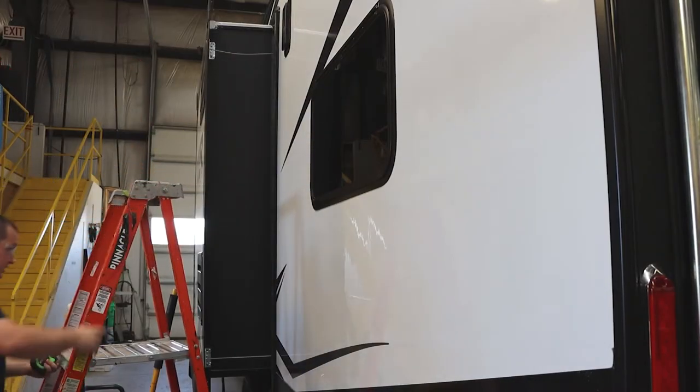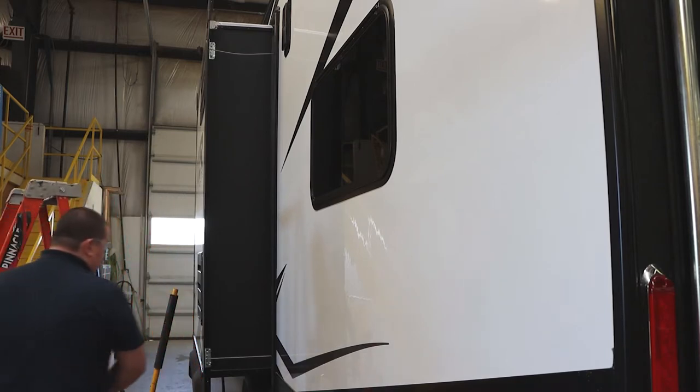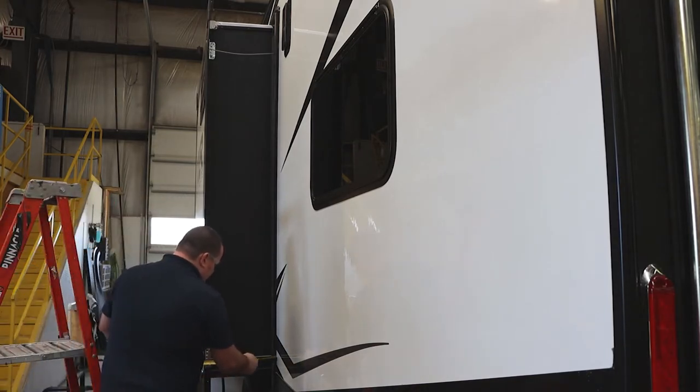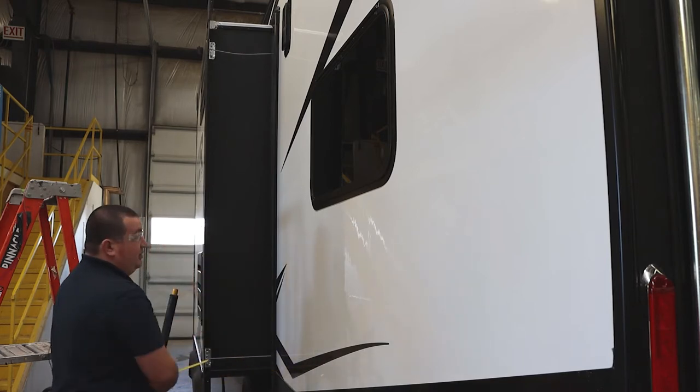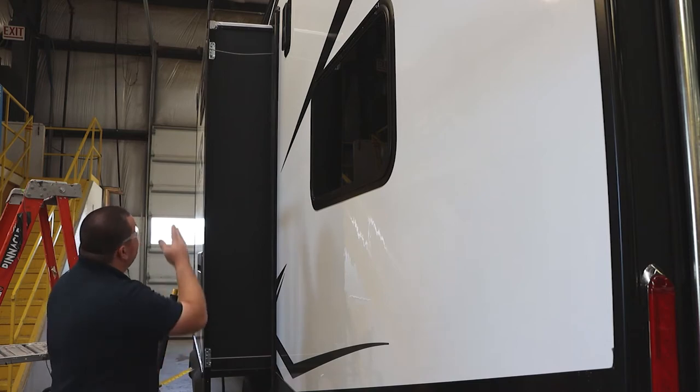And we're going to match that to the bottom. Right here we're about 15 inches. So from here we know we need to tighten that cable up approximately a half inch tighter to get the top in alignment with the bottom.